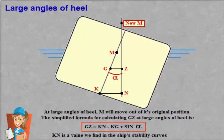When moving a mass already on board, G moves parallel to the movement of the mass.